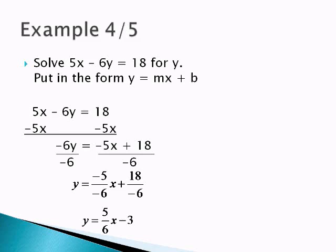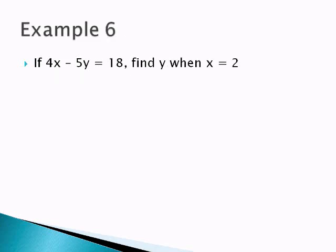If 4X minus 5Y equals 18, we're going to find Y when X equals 2. Well, now what I can do is I can plug 2 in for that X. Because I know the X is 2. We don't know what Y is yet, but I know for sure that X is 2.